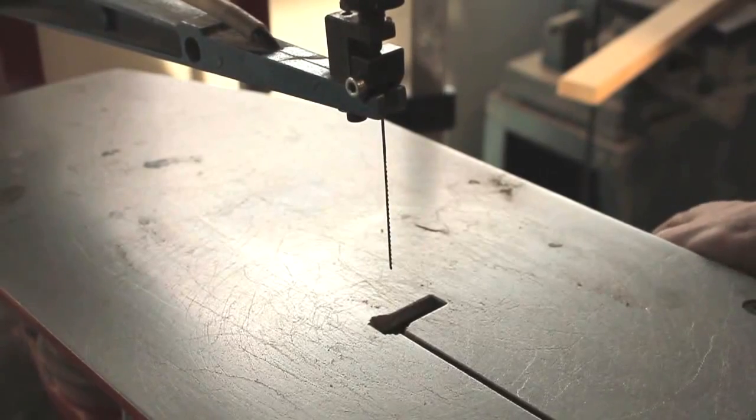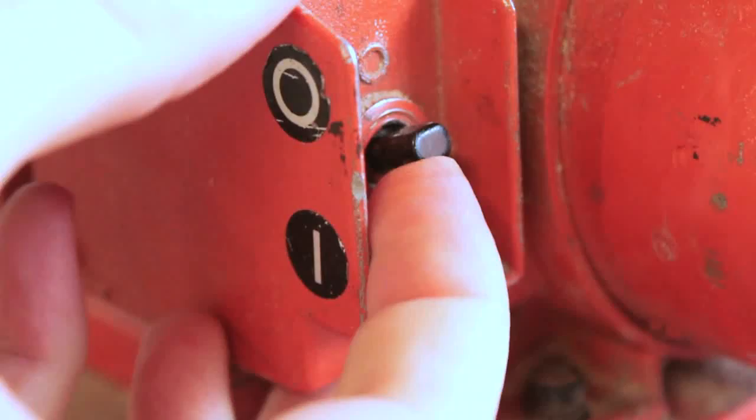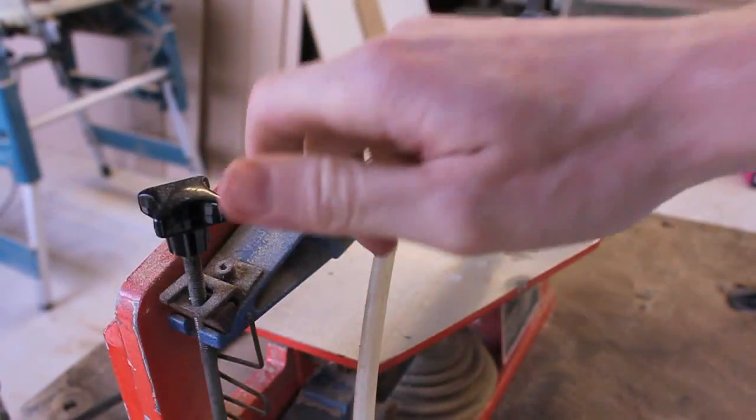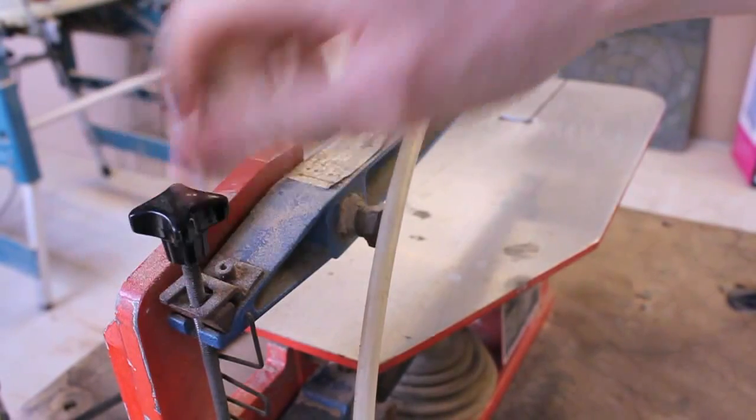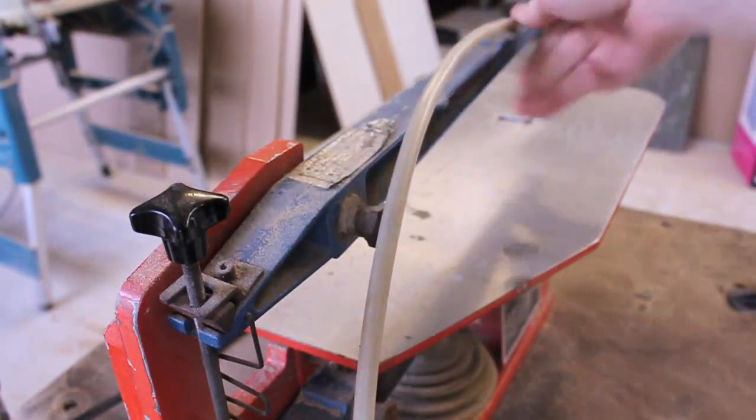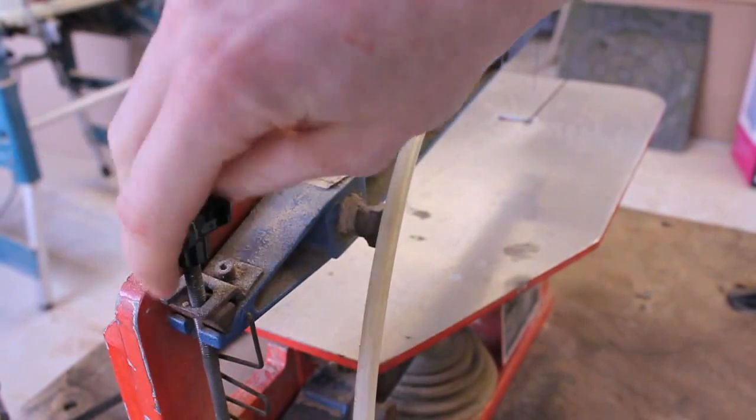Occasionally a scroll saw blade will break. The first thing to do is switch the machine off and isolate it at the power point. Next loosen the tensioning handle so that the top arm is free to move. Make sure that you have alerted a technician or teacher so that they can get a replacement blade for you.